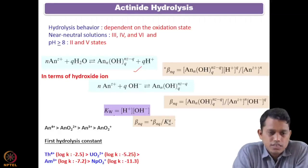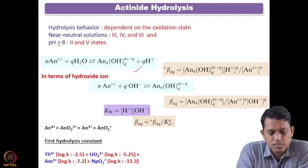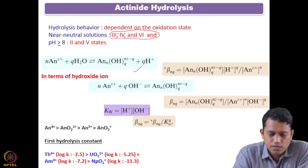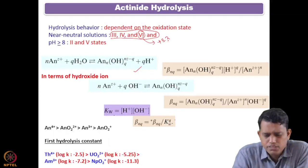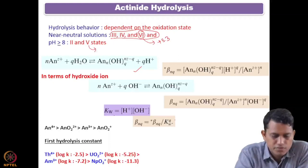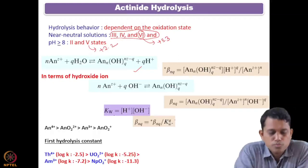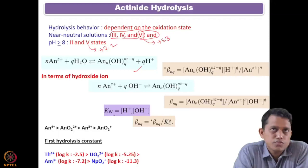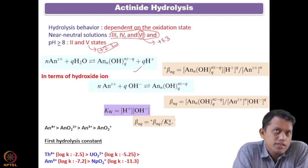We discussed that the tendency of hydrolysis is dependent on the oxidation state — plus 3, plus 4, and plus 6. When we talk about plus 6, it is basically plus 3.3, and when we say plus 5, it is basically plus 2.2. We have seen that higher oxidation states have hydrolysis in the range of near-neutral pH, whereas for the lower state, that is plus 2.2, hydrolysis will start at pH greater than 8.